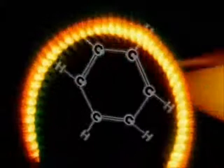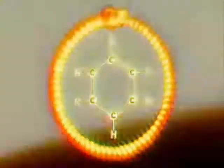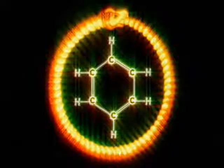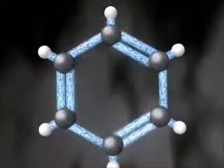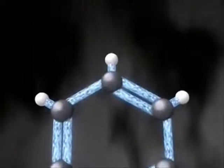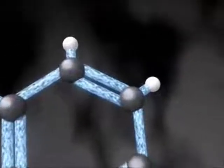The six carbon atoms of the benzene molecule weren't linked in a chain. Like the snake, they formed a ring, each with a hydrogen atom attached, with alternating single and double bonds.